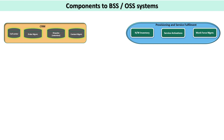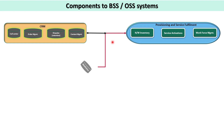In provisioning and service fulfillment, there are three different work packages: network inventory, service activation, and workforce management. What exactly happens is the customer gets activated in the system after basic checks are done. After that, provisioning of the subscriber happens and it gets mapped to your CRM database.